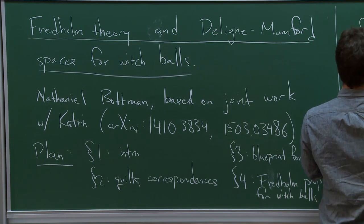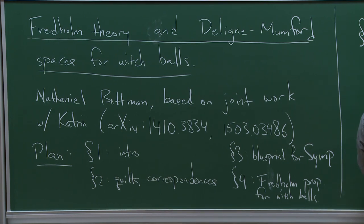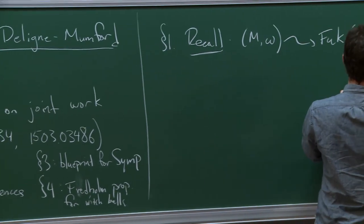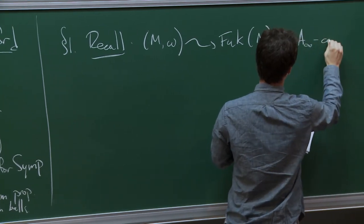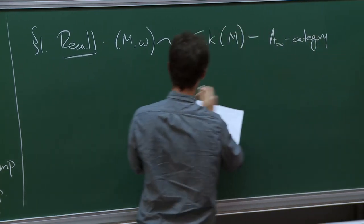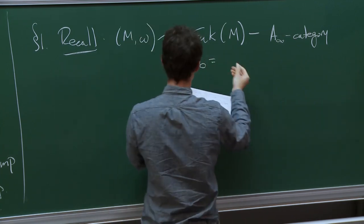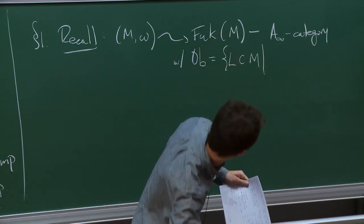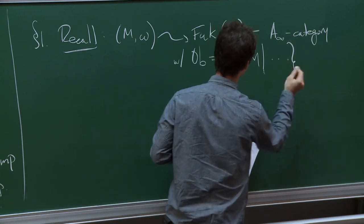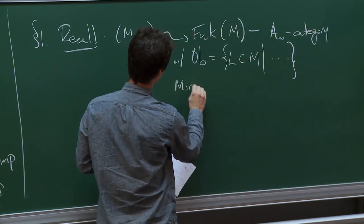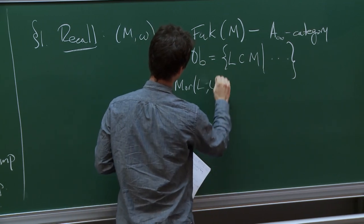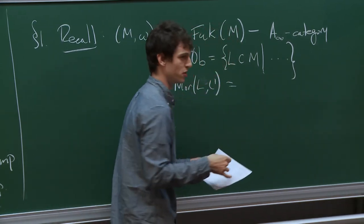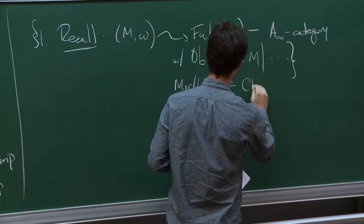Let me recall that if we have a symplectic manifold, then under favorable circumstances we can define the Fukaya category associated to it. This is an A-infinity category. The objects are certain kinds of Lagrangians inside M. Depending on your situation, they'll be required to satisfy some hypotheses. If you take two Lagrangians, then as long as they intersect transversely, the morphisms are defined to be the free vector space generated by their intersections, and in general it equals the Floer complex.